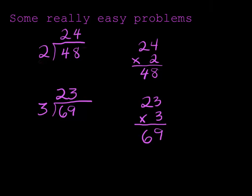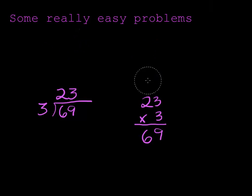So these problems were really easy because the divisors were really small, and also because there weren't any remainders within the problem.